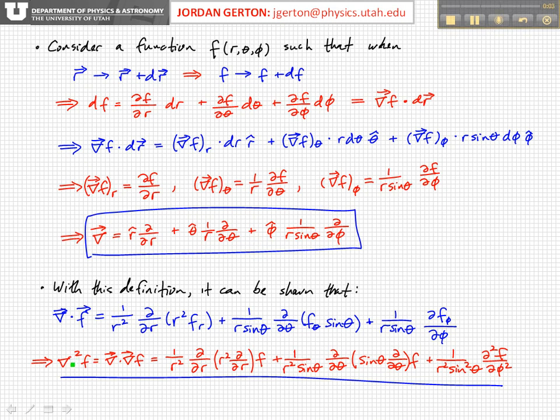So the Laplace operator del squared is equal to del dot del, applied to f. And again, using this identity up here and our definition for the gradient, we get that the Laplace operator is equal to 1 over r squared, d by dr, partial with respect to r, r squared, partial with respect to r on f.